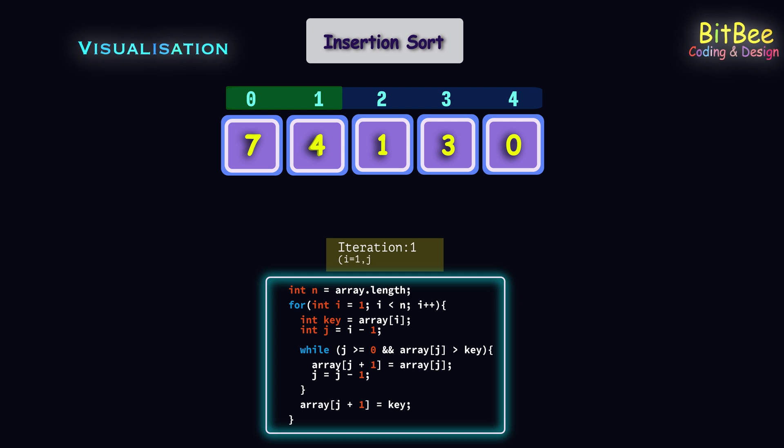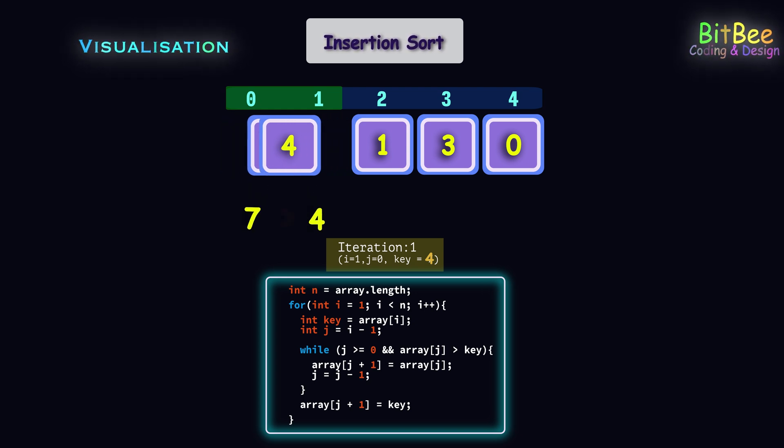In the first iteration, i points to 1 and j points to the 0th index, and key points to i, that is 4. The key 4 and the value at 0, that is 7, will be compared. Since 7 is greater than 4, 7 and 4 will be swapped. Then inner iteration ends since j reaches the 0th index.